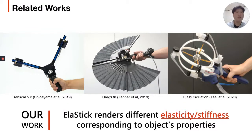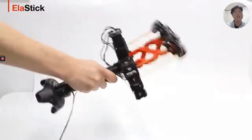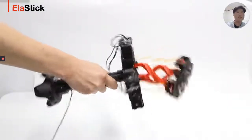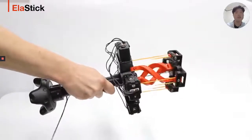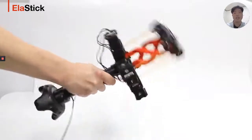Previous works already explored numerous approaches to render various physical properties of virtual objects held in hand. In the case of Elastic, we focus on rendering different dynamic responses by adjusting the device's elasticity corresponding to the virtual object properties. Basically, Elastic is a shakeable and swingable VR controller that can change its stiffness in different bending directions.